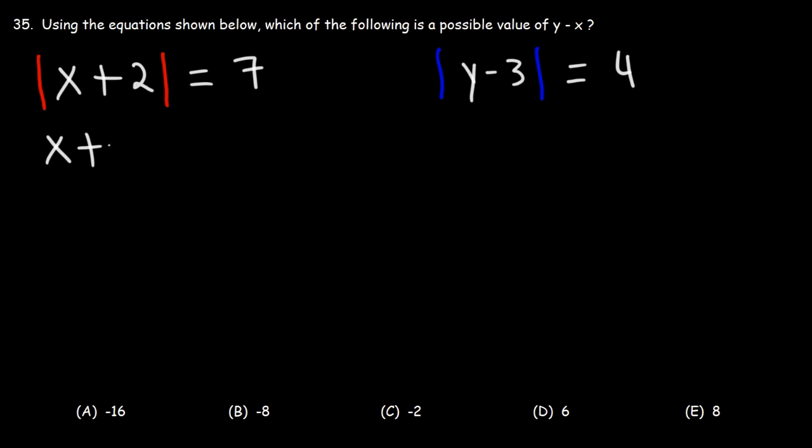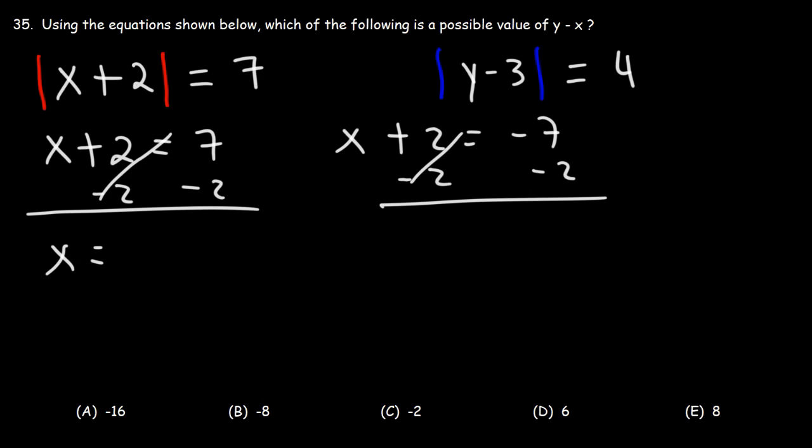For the first one, we're going to set x plus 2 equal to two things: 7 and negative 7. Now let's subtract both sides by 2. 7 minus 2 is 5. Negative 7 minus 2 is negative 9. So we have two possible answers for x. x could be 5 or it can be negative 9.